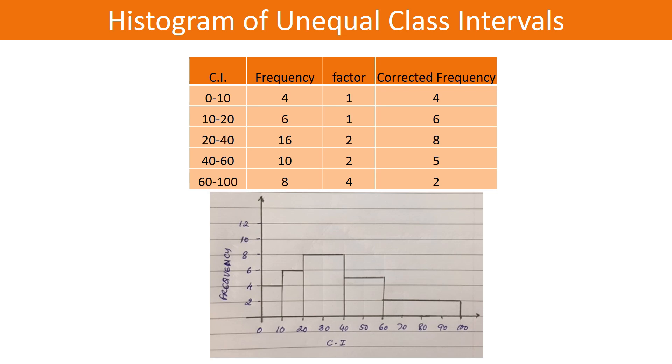How do we draw a histogram for unequal class intervals? Since width represents the class interval, appropriate correction is needed. For a class interval of 10, assign a factor of 1. For 20-40, the factor is 2. For 60-100, the factor is 4. Divide the frequency by this factor to get the corrected frequency, which will be represented by the height of the rectangle.